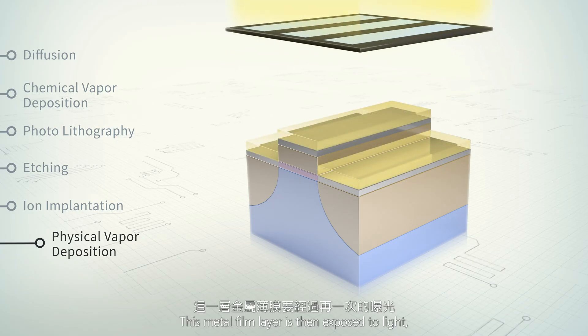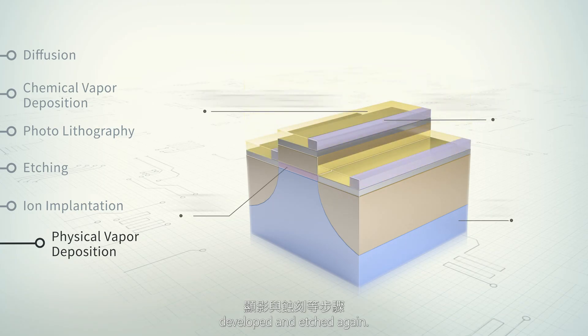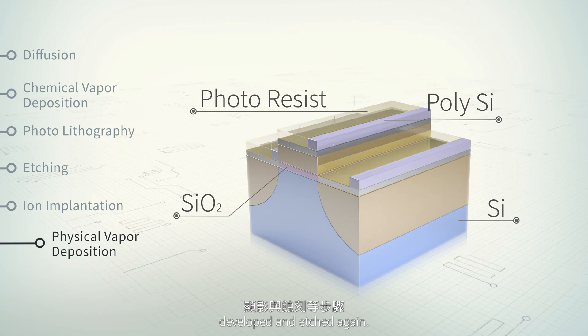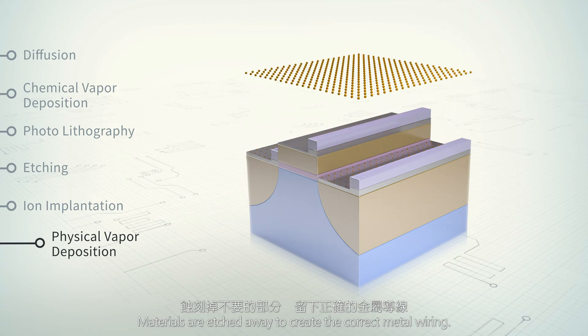This metal film layer is then exposed to light, developed, and etched again. Materials are etched away to create the correct metal wiring.